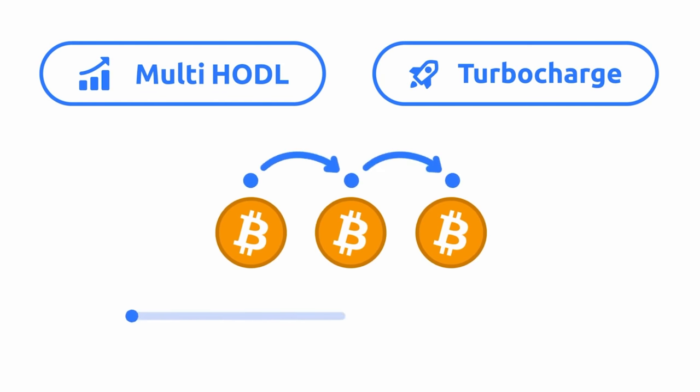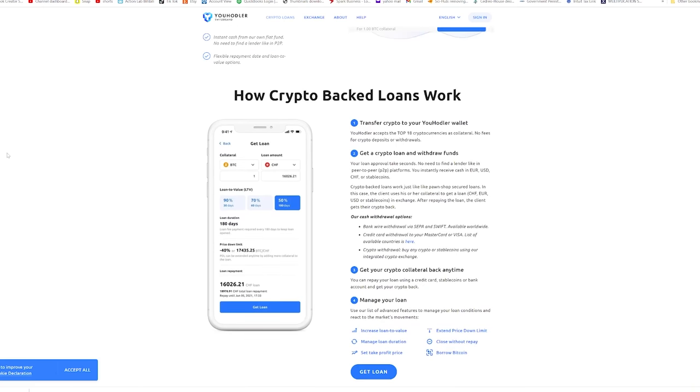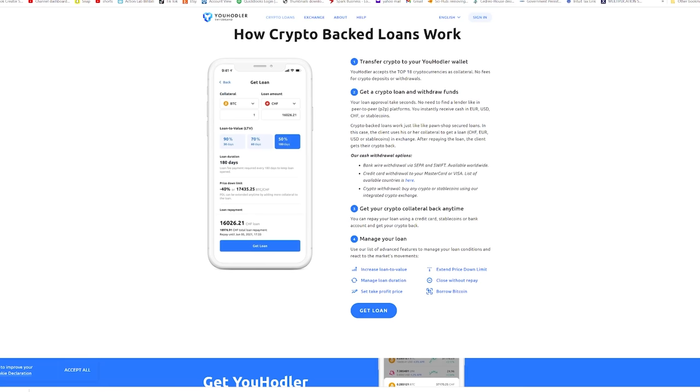With multi hodl, you can extract profit in any market condition. Also you can use your cryptos or your NFT as collateral for crypto loans with the highest loan to value ratio, around 90%. You can get loans in Euro, US dollar or even Bitcoins. You can withdraw instantly to your credit card or your personal bank.